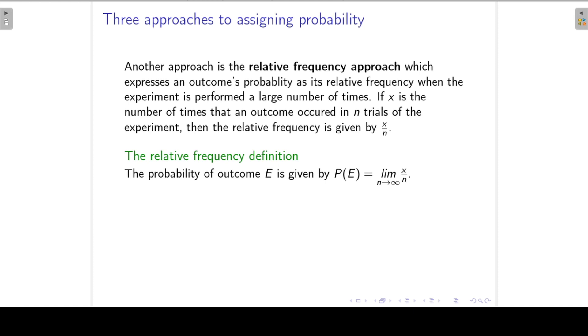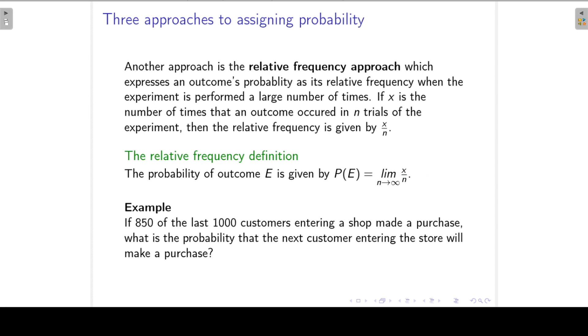Another approach is the relative frequency approach, which expresses an outcome's probability as its relative frequency when the experiment is performed a large number of times. So if x is the number of times that an outcome occurred in n trials of the experiment, then the relative frequency is given by x over n. So the relative frequency approach to probability is that the probability of outcome E is the relative frequency x over n when our n is large. So this limit n goes to infinity just means that our n becomes large.